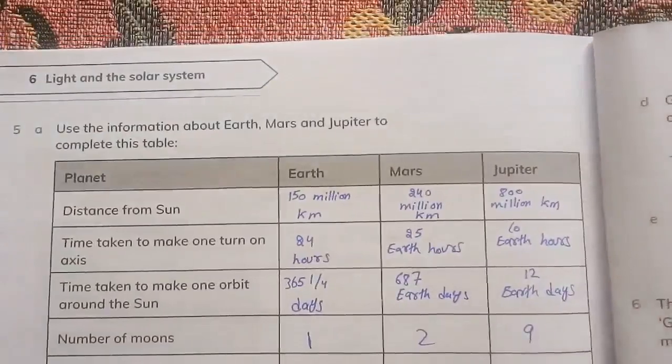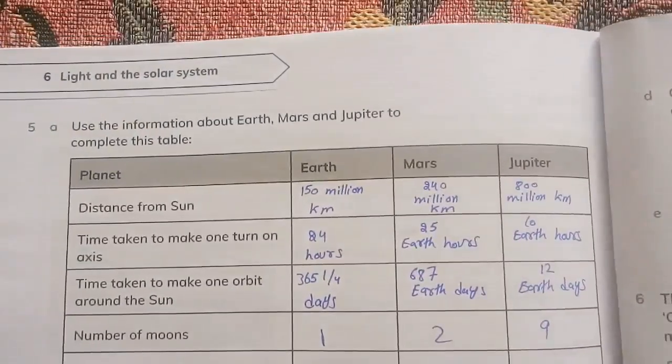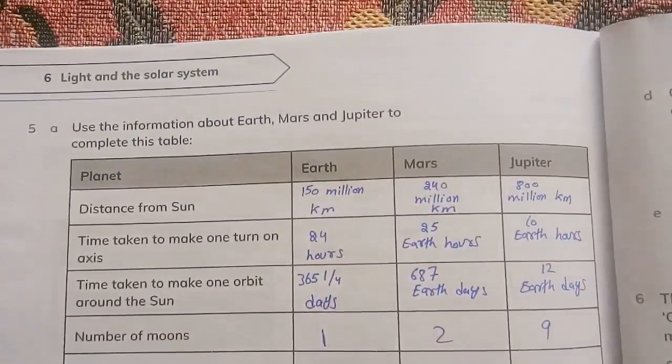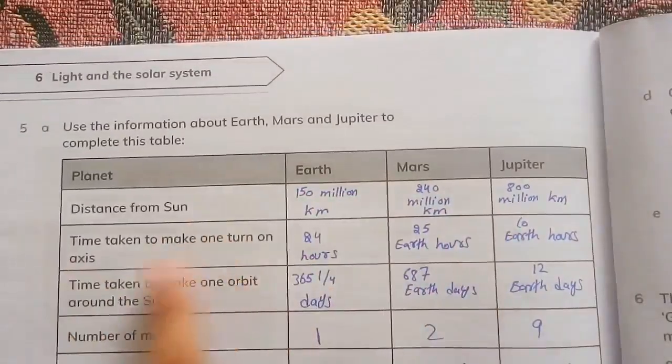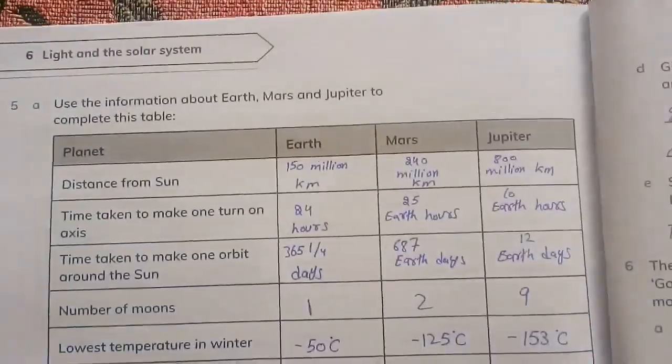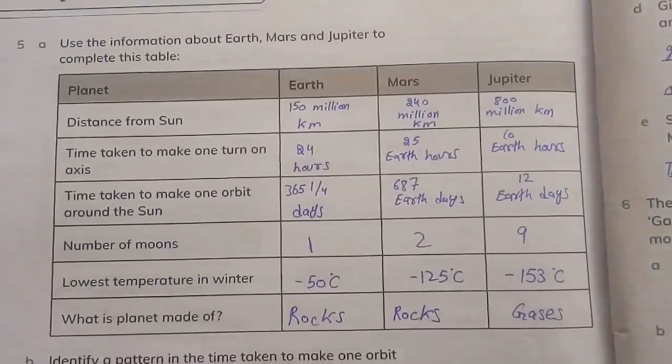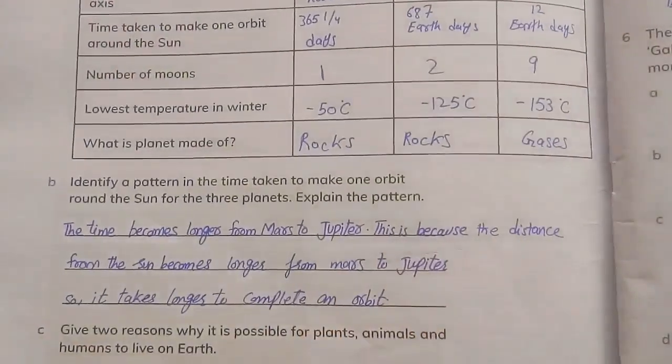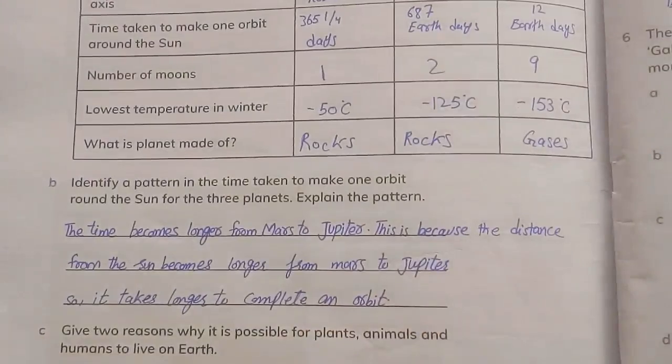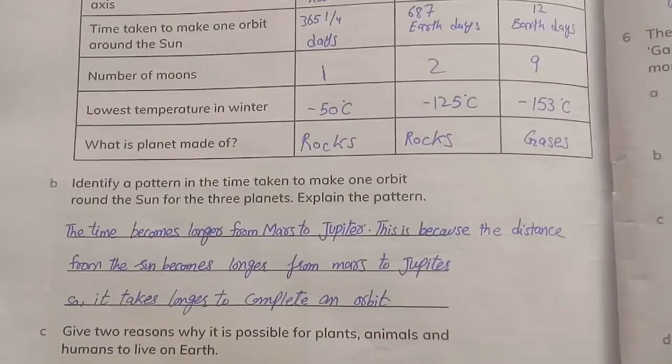On page number 90 we have question number 5. First question: Use the information for Earth, Mars, and Jupiter to complete the table distance from the Sun. I've already filled this table. You can see this table.